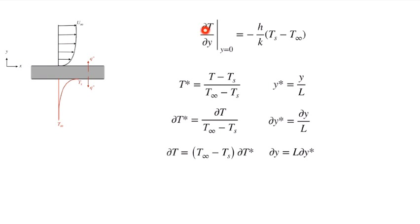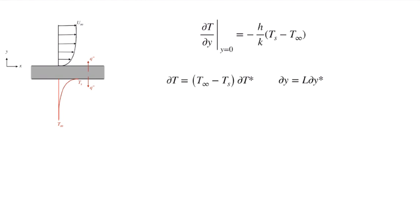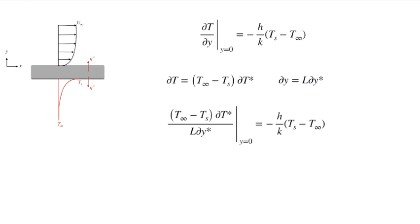We can solve for each term: dT equals (T infinity minus Ts) times dT*, and dy equals L times dy*. Substituting these into the expression for the temperature gradient at the wall, we get an expression where L dy* comes from the denominator and (T infinity minus Ts) dT* is the numerator.